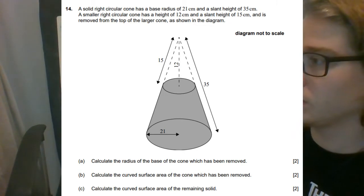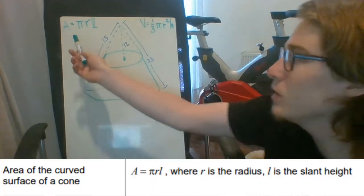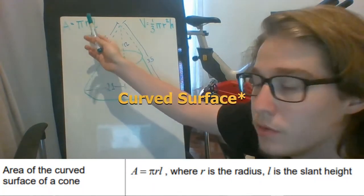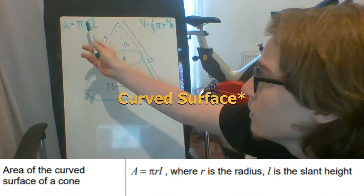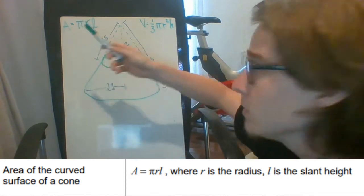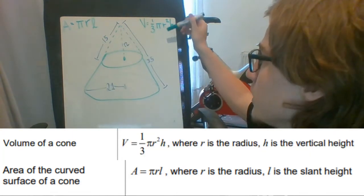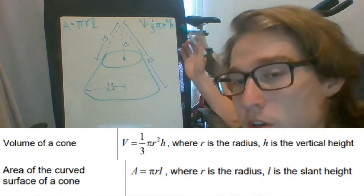First things first, just to get familiar with the formula booklet, we have the curved surface area of a cone right here with π times R times L, with L being the slant height. And for the volume of a cone it would be one third times π times R squared times the vertical height.